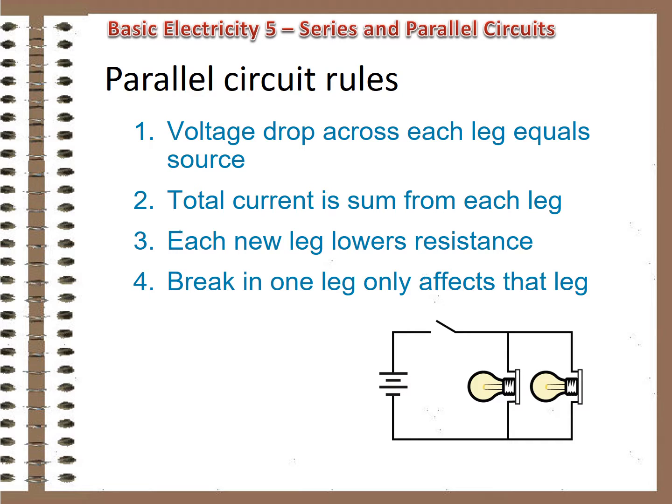So there you have parallel circuits. Voltage drop across each leg equals the source voltage. Total current is the sum of the currents in each leg. Each additional parallel leg lowers the total resistance, but if a break occurs in one of the legs, only that leg is de-energized.